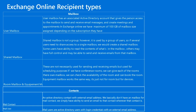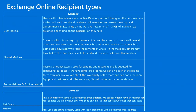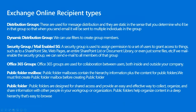A mail contact is an Active Directory contact with an external email address. We don't give a mailbox for mail contact; we simply have the ability to send an email to that contact wherever they are. Mail users are Active Directory users with login credentials and an external email address. Public folders are designed for shared access and provide an easy and effective way to collect, organize, and share information with other people in your workgroup or organization.